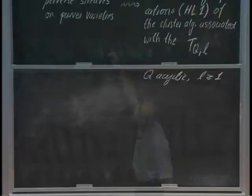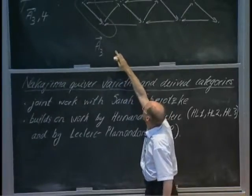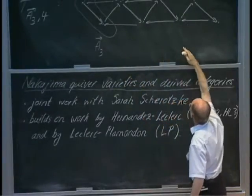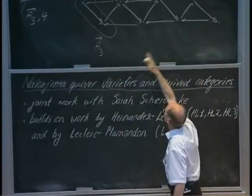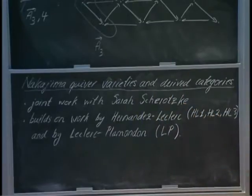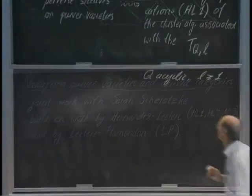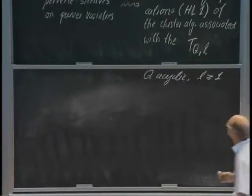in this case A3. Then, in this case, you repeat it four times. You have four copies of this quiver corresponding to the level 4. And you add some extra arrows. The details are not important at this moment. And remember,